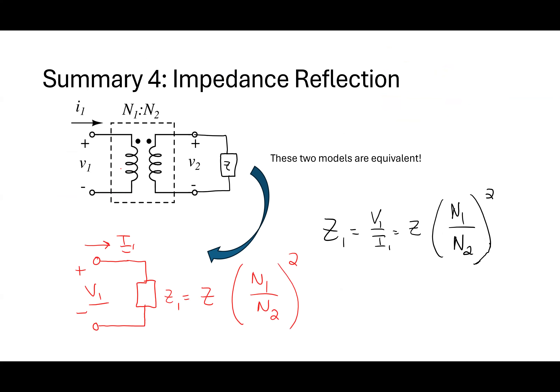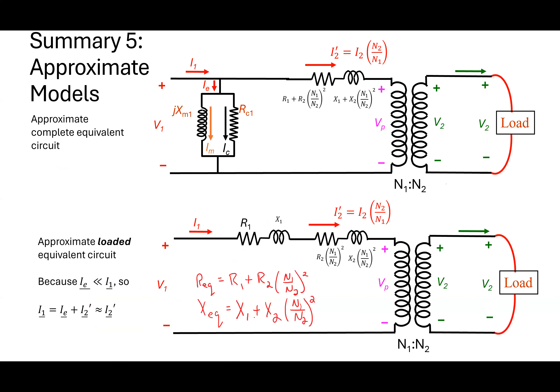Now the notion of impedance reflections: if I put an impedance Z on the secondary side, from the perspective of the primary terminals I can reflect that impedance across the transformer through the turns ratio squared. I could also go the opposite direction — something on the primary side reflected to the secondary side. To do that, I would swap N1 and N2 in that equation.